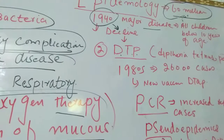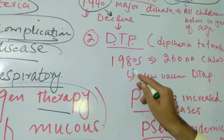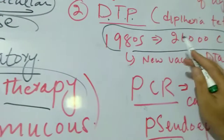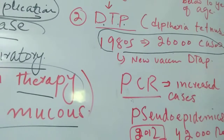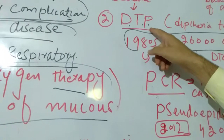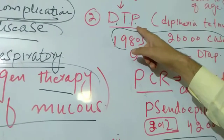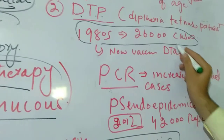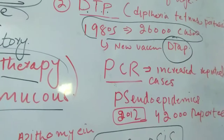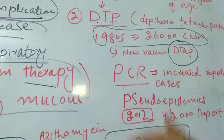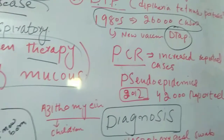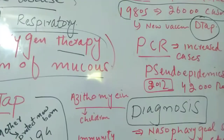In the 1980s, cases increased — about 26,000 cases were reported — because the DTP vaccine was no longer working effectively. A new vaccine called DTaP vaccine was introduced, and due to this vaccine the disease once again declined.